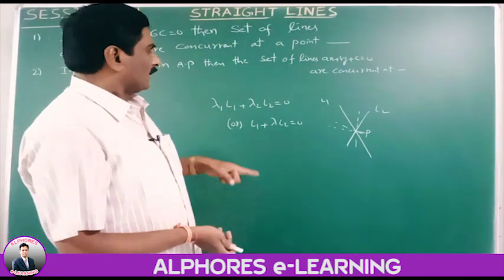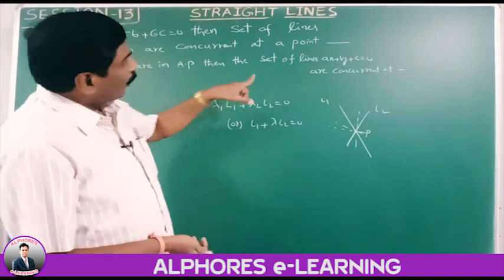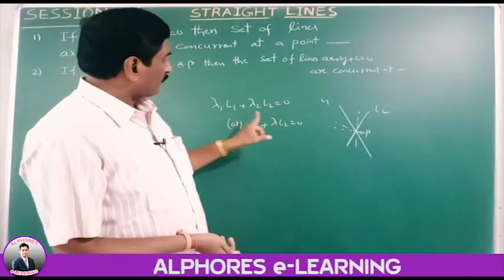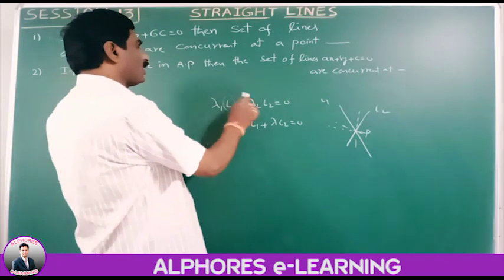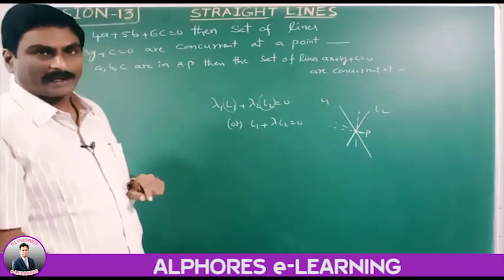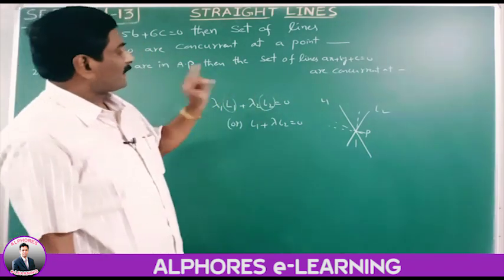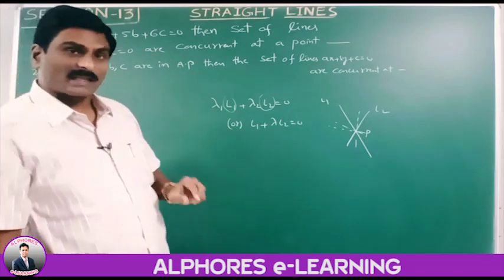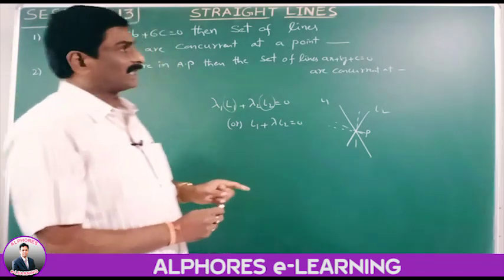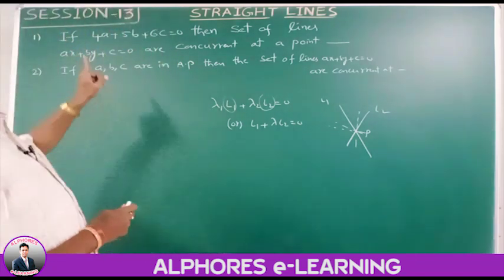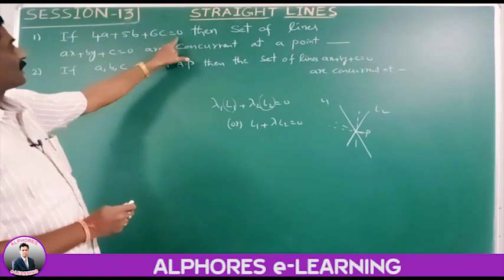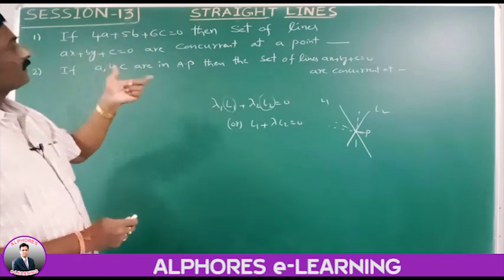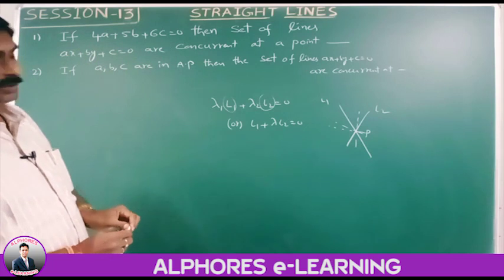The point of concurrency is the point of intersection of the lines l1=0 and l2=0. In this case, 4a plus 5b plus 6c equals 0, meaning a, b, c are real numbers that follow this relation.